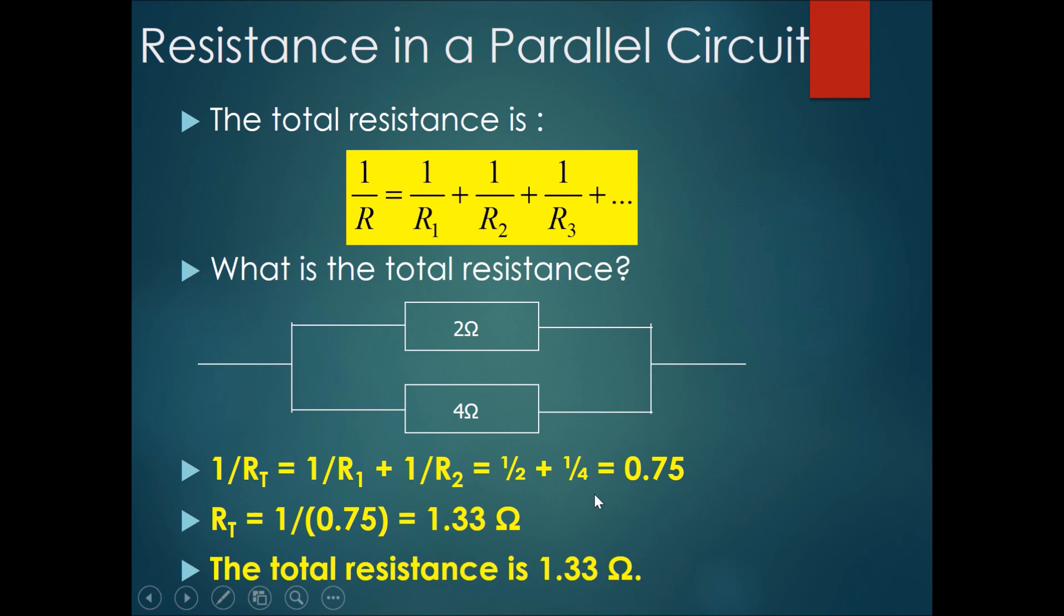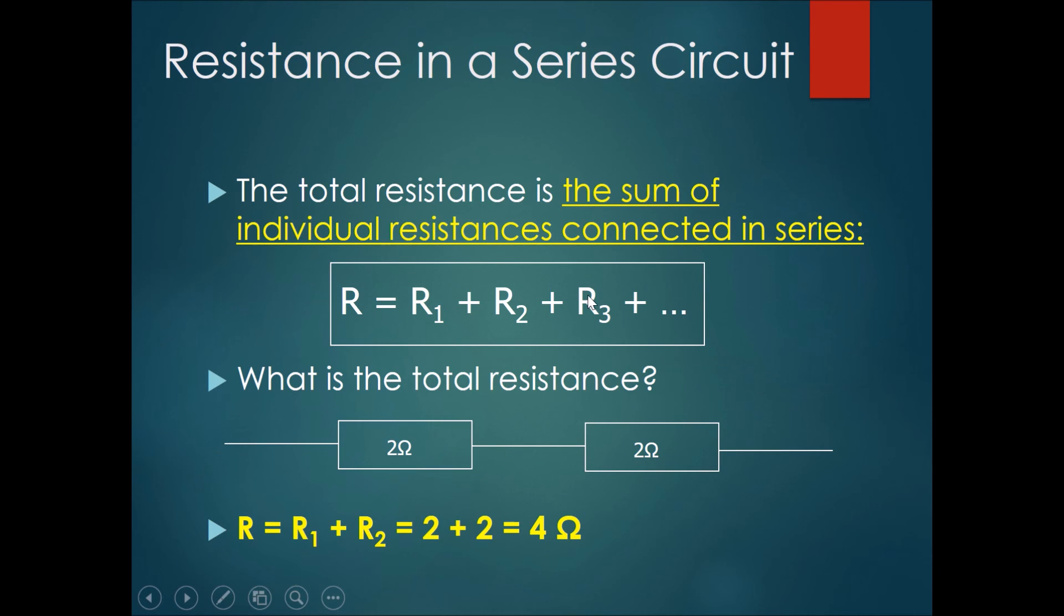Now this is interesting because it shows that if you put the two resistors in parallel, the total resistance becomes less than the smallest resistor in the parallel circuit. However, if you look at the series circuit, you would see that the total resistance in the series circuit would be more.